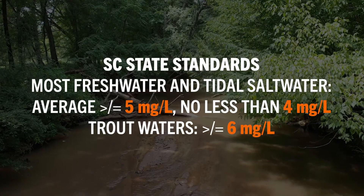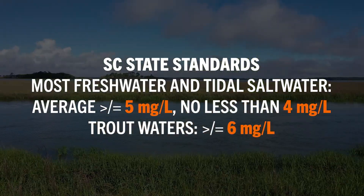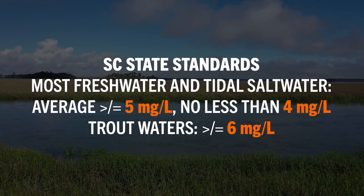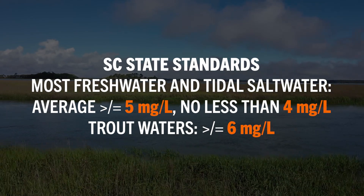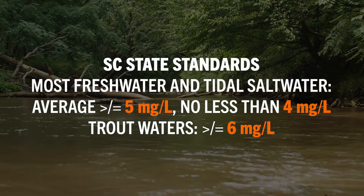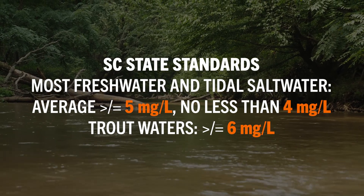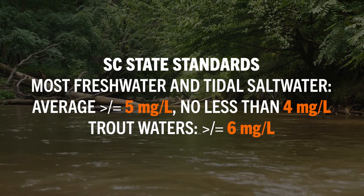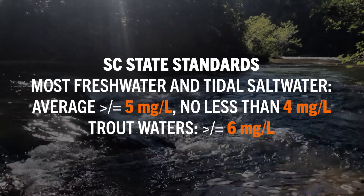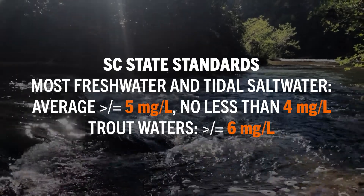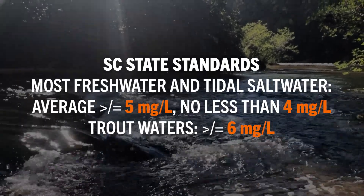For most of South Carolina's freshwater streams and tidal salt water, dissolved oxygen must average at least five milligrams per liter and be no less than four milligrams per liter to meet South Carolina state standards. In special trout waters, dissolved oxygen must be no less than six milligrams per liter.